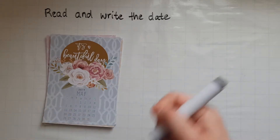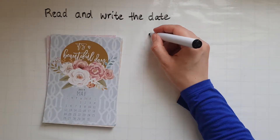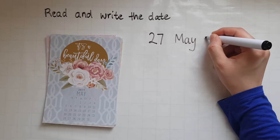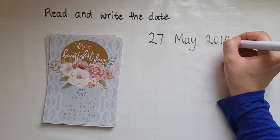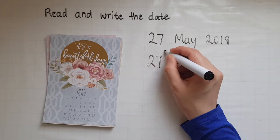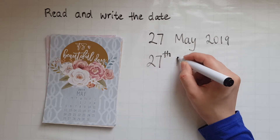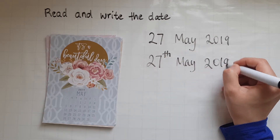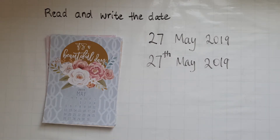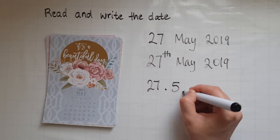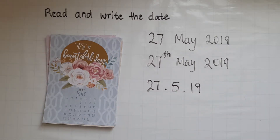So today's date we'd write as 27th of May 2019. Another way to write it is 27th of May 2019. We can also write it as 27th of the 5th 2019, because May is the fifth month.